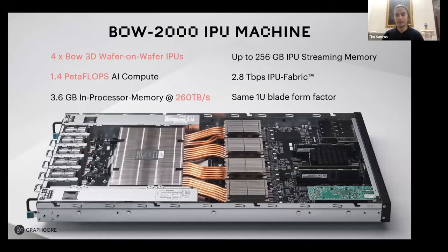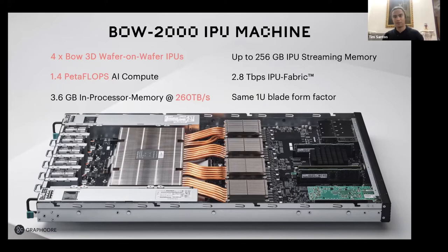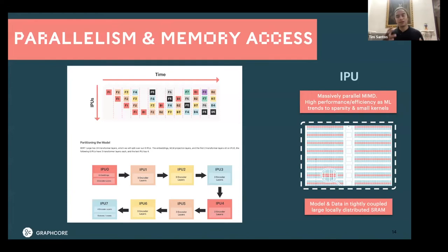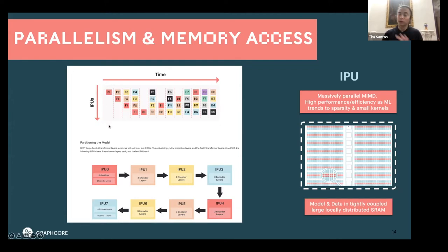Each processor can be scaled into different racks. For example, the BOW 2000 IPU machine has four IPU wafers, scaling from 350 teraflops per chip times four — 1.4 petaflops — with 16 IPUs, 64, 256, and the biggest scale-out system at 1024 IPUs. The fine-grained parallelism makes the most of multiple instruction, multiple data, where multiple computational steps happen on different subsets of the data simultaneously.